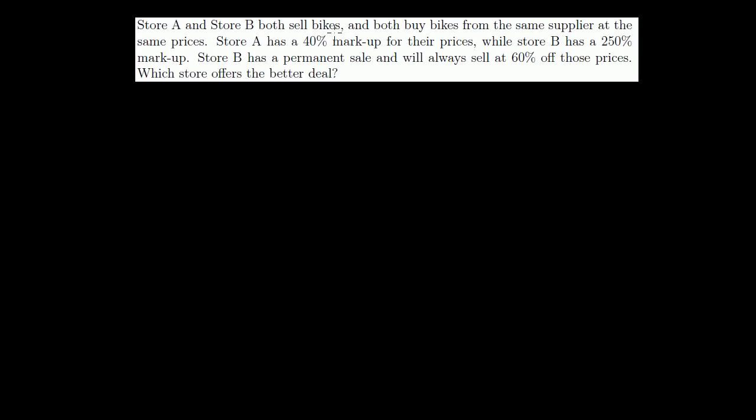Store A and store B both sell bikes and both buy bikes from the same supplier at the same price. Store A has a 40% markup. That means whatever they buy the bike for, they sell it for 40% above that. While store B has a 250% markup. Store B has a permanent sale and always will sell it 60% off those prices. Which store has a better deal? So let's say that they're both buying the bike. So x equals the price from supplier.